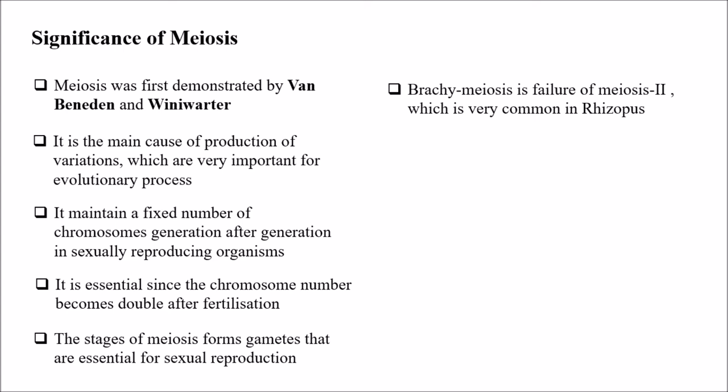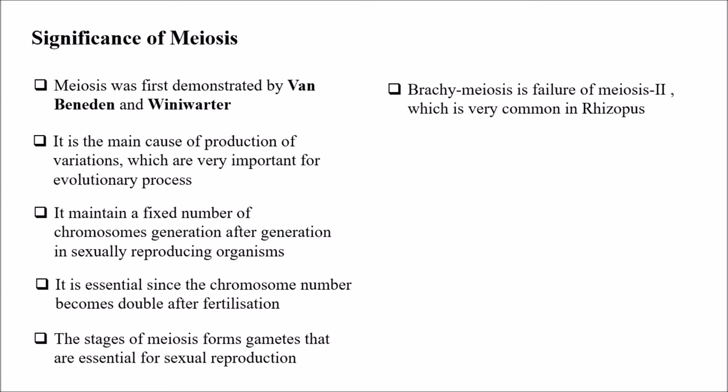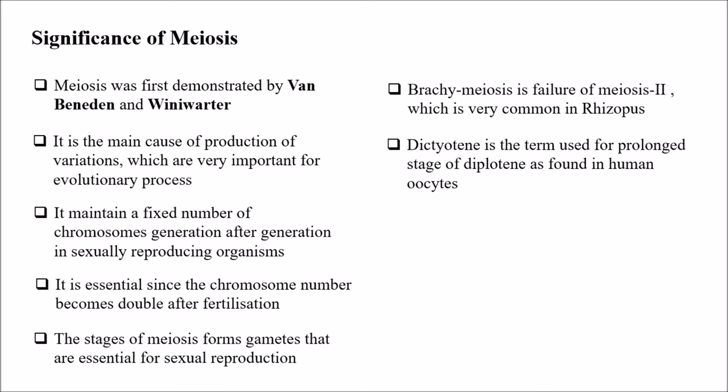Giving some examples of meiosis and its failures: brachymeiosis is failure of meiosis 2, which is very common in Rhizopus. Dictiotein is the term used for prolonged stage of diplotene as found in human oocytes. So if you see in human oocytes, Dictiotein is observed, which is the prolonged stage of diplotene.